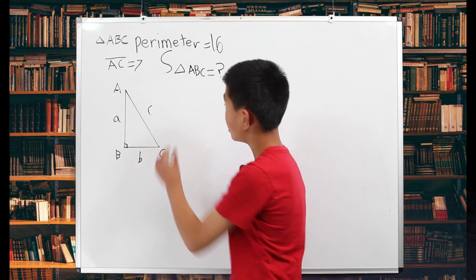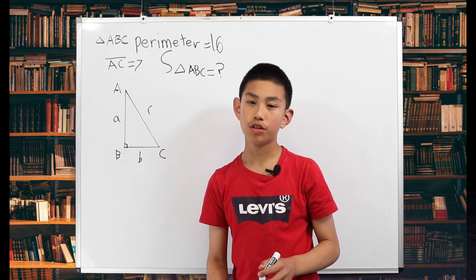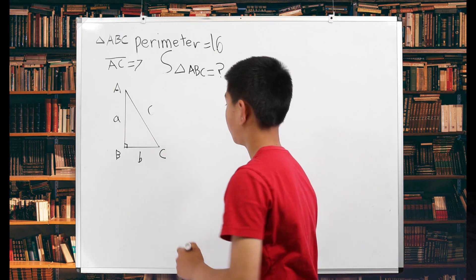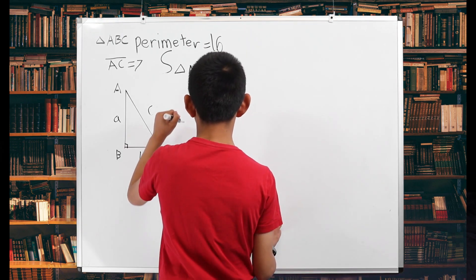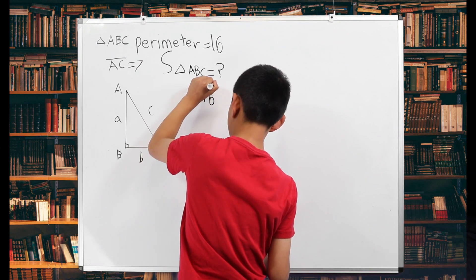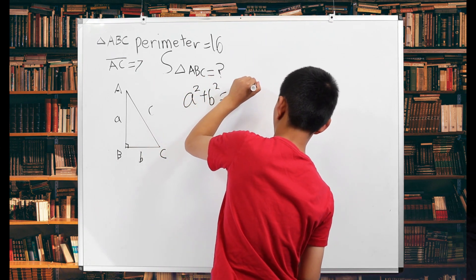And from this equation on the board, we can write some equations. The first one is the Pythagorean theorem. A squared plus B squared is C squared, which is 7 squared or 49.